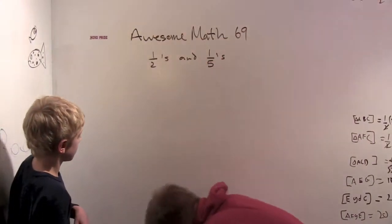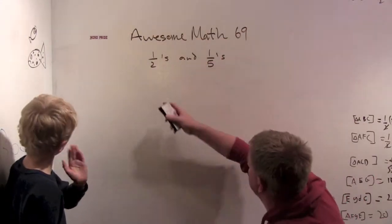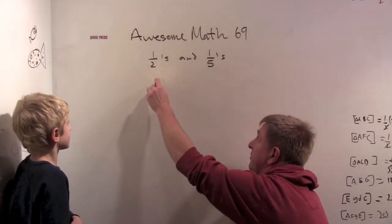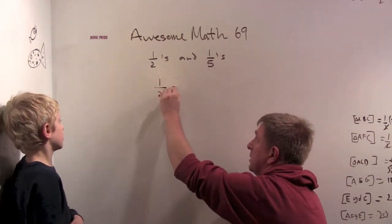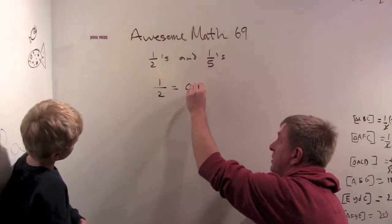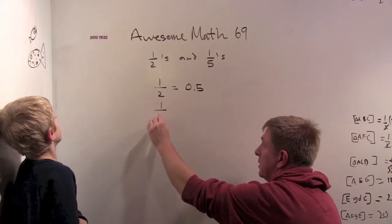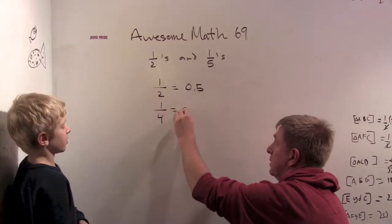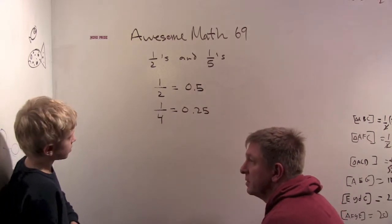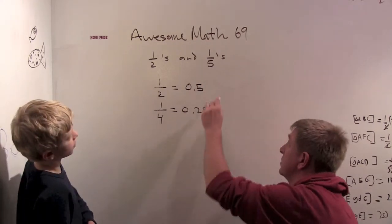We are talking about fractions this morning, especially one halves and one fifths. Do you remember what one half was as a decimal? It was 0.5. How about one fourth? It was 0.25. What about one fifth? What was one fifth as a decimal? 0.2.